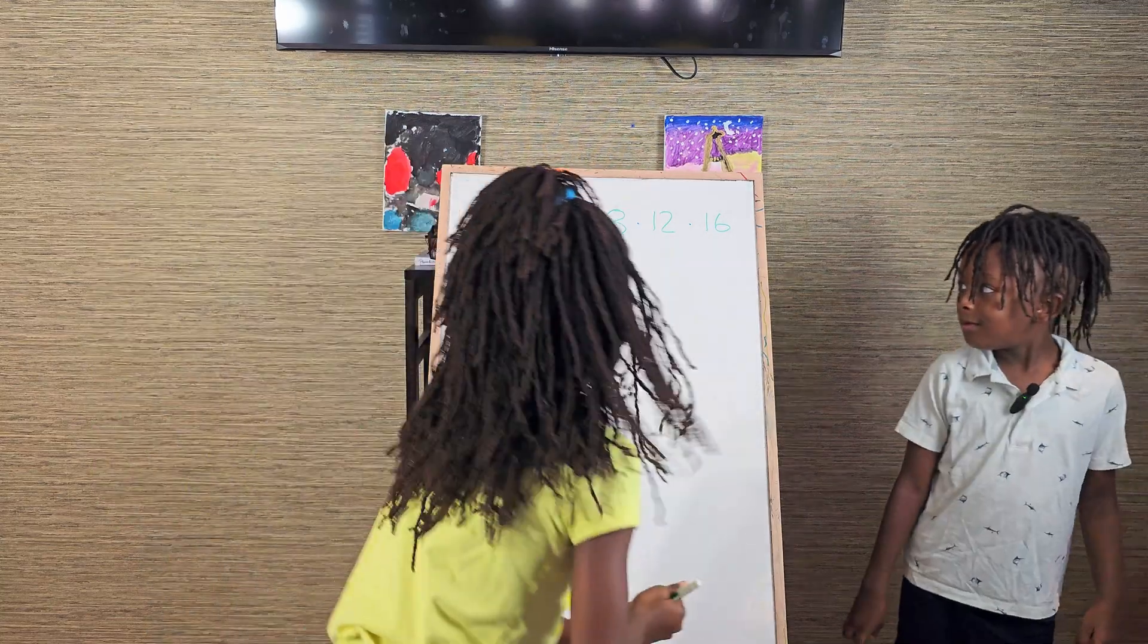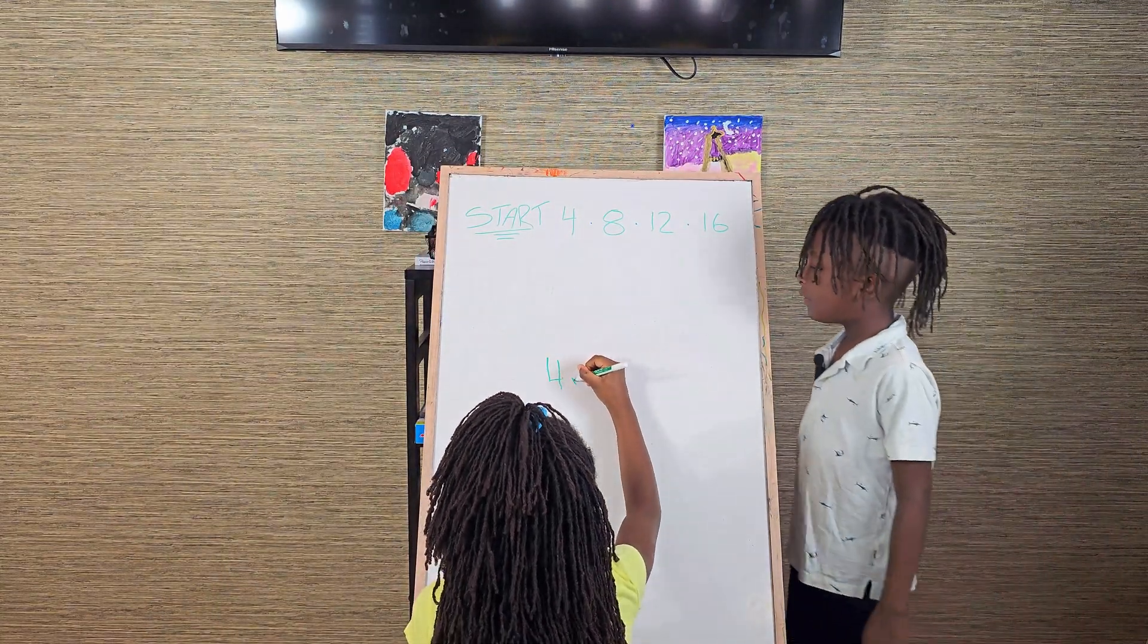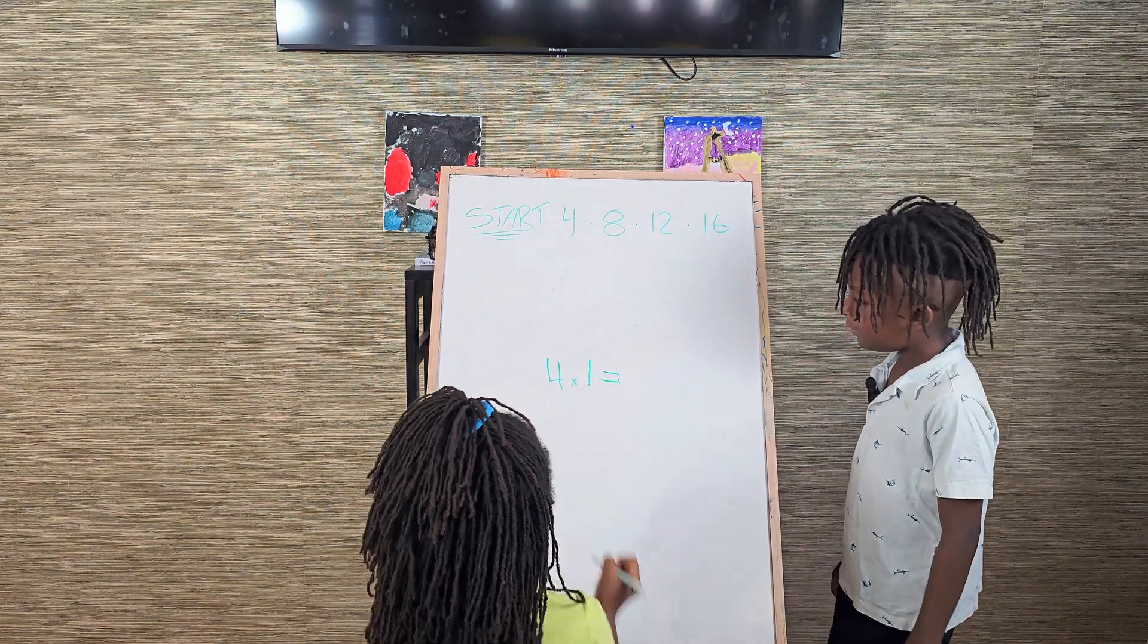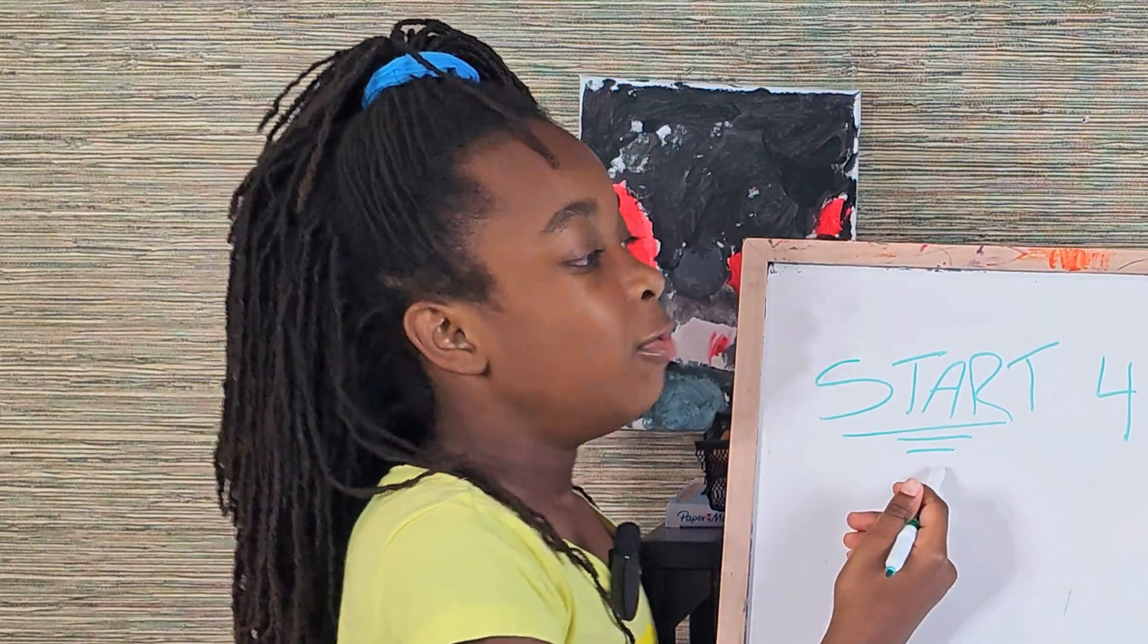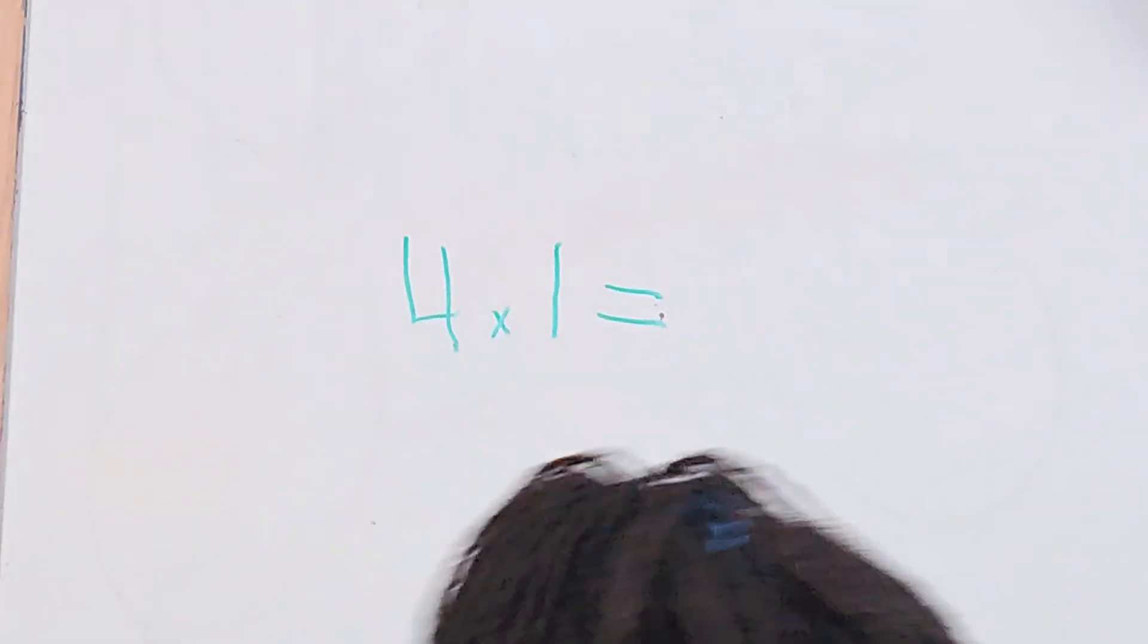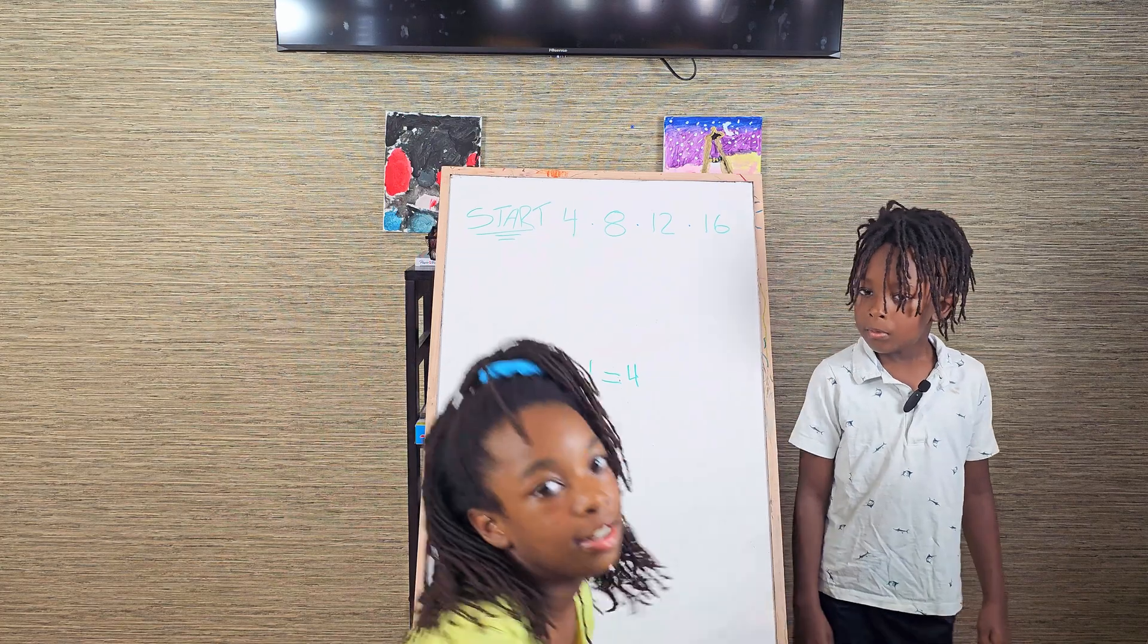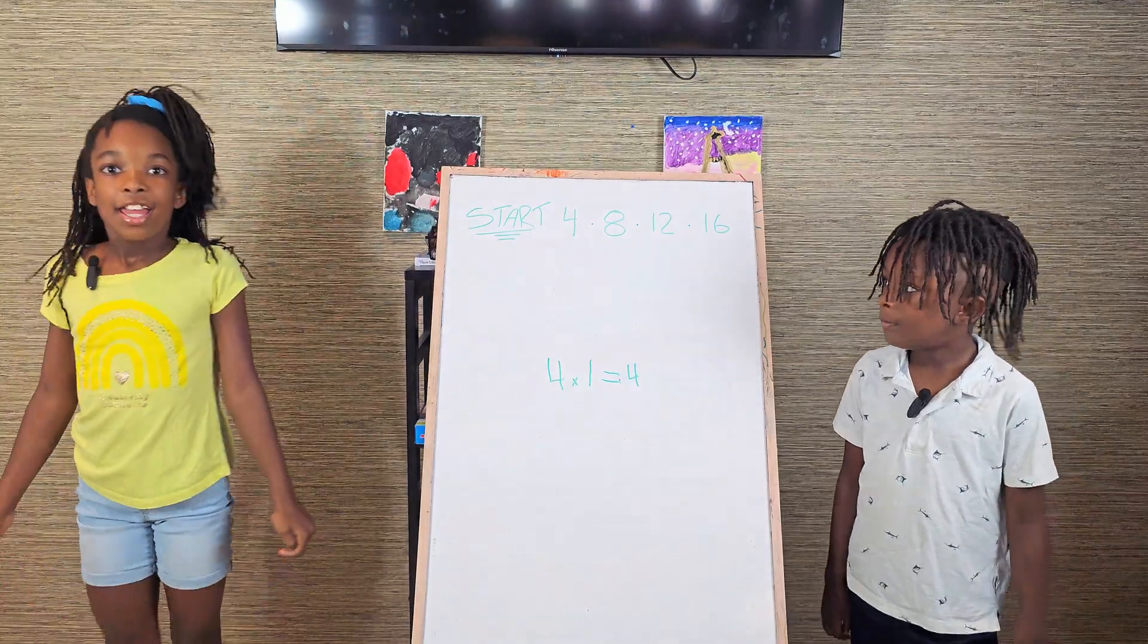So, let's say you want to know what four times one is. We'll go to the start and move one space. Okay! One. We're at four. So that means that four times one is four! Great job everybody! Yes!